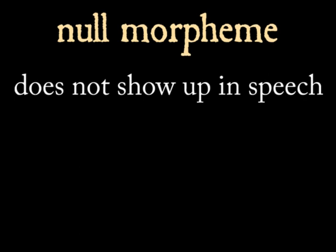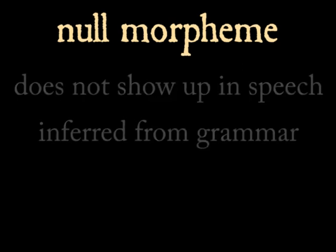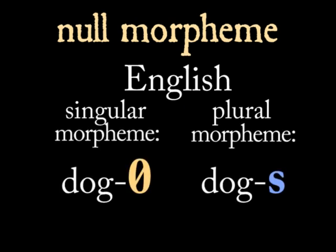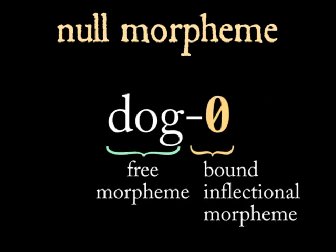This concept of a silent, meaningful unit is strange at first, but we can argue for its existence based on the grammar of a language. Knowing that English speakers differentiate between singular and plural, it could be argued that 'dog' actually carries a zero morpheme. So the free morpheme 'dog' and the bound zero morpheme together allow us to identify the category singular noun — it's one dog and not multiple dogs.